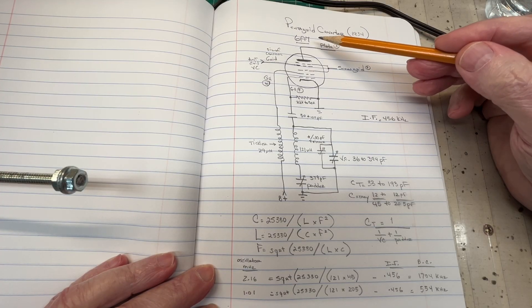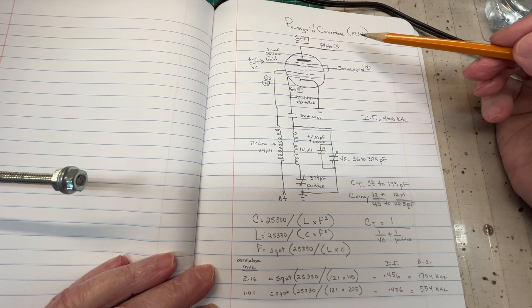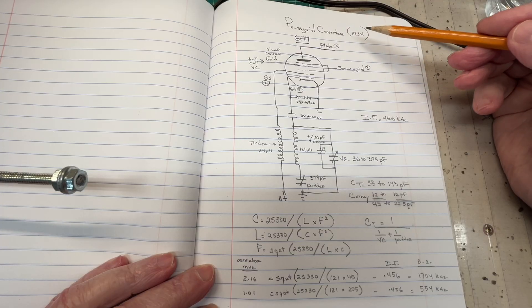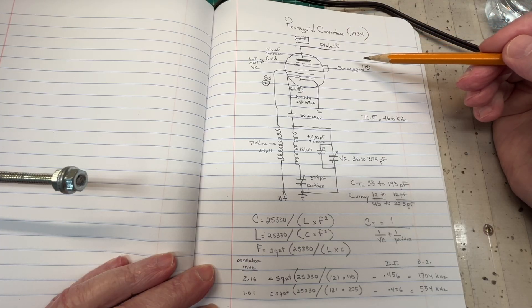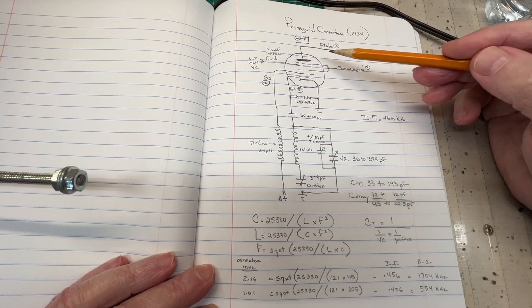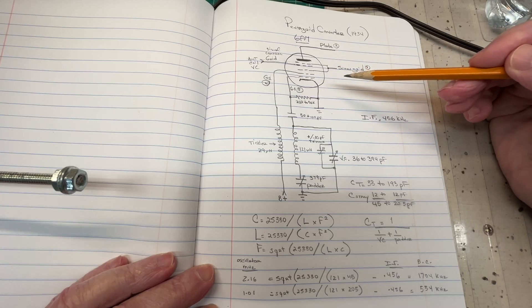Again, the 6A7 pentagrid converter, I think it was introduced in the early 1930s around 1934. Again, the one tube acts as the oscillator and the mixer.